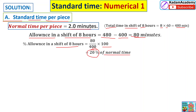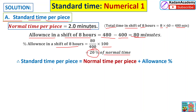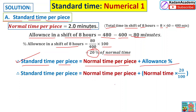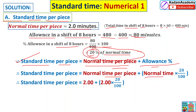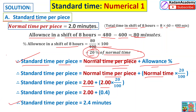To find standard time: Standard time equals normal time per piece plus allowance percentage of normal time. Normal time is 2 minutes and allowance is 20 percent, so: Standard time = 2 + (2 × 20/100) = 2 + 0.4 = 2.4 minutes. So the standard time is 2.4 minutes per piece. This is the first answer.